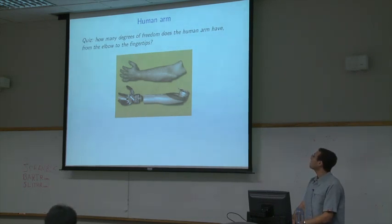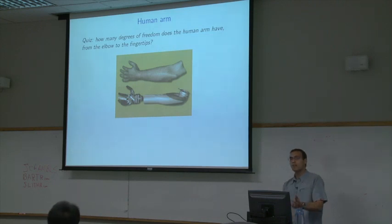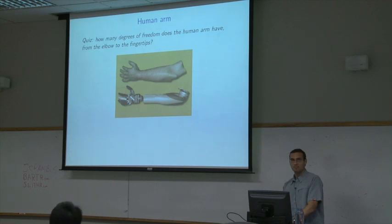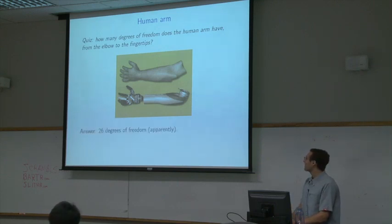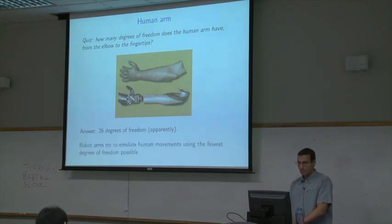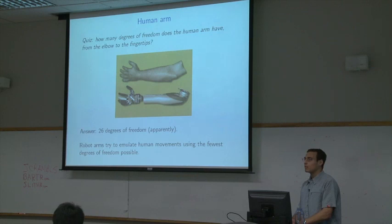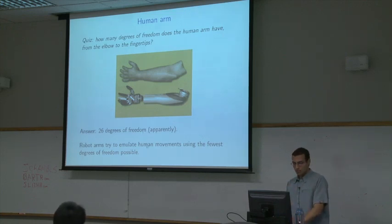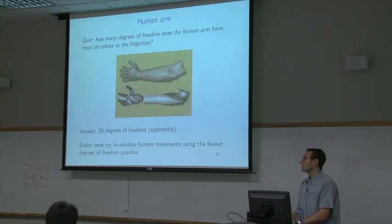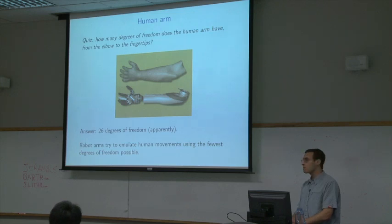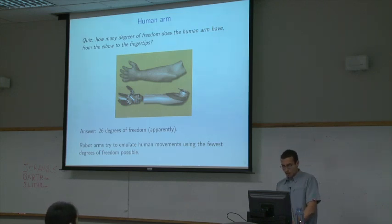How many degrees of freedom does the human arm have from the elbow to the fingertips? The answer is apparently 26 degrees of freedom. Robot arms try to emulate human movements using the fewest degrees of freedom as possible, because degrees of freedom are expensive in monetary value and prone to failure. This is an analogy to statistics: if we have two estimation procedures, we'd like to take the one with the fewest degrees of freedom if it's giving us the same performance.